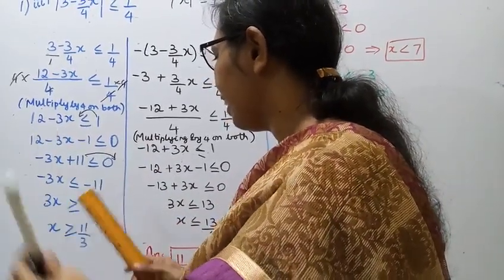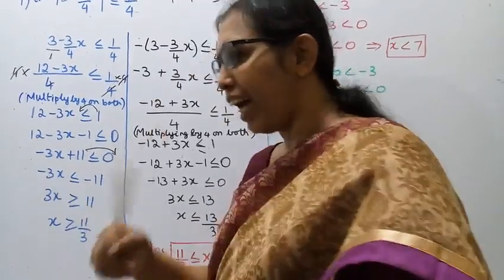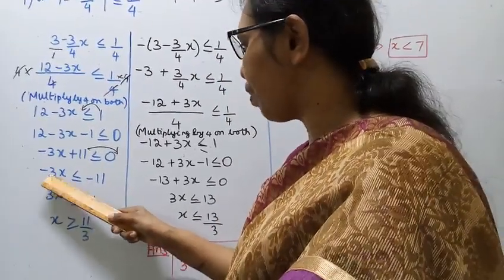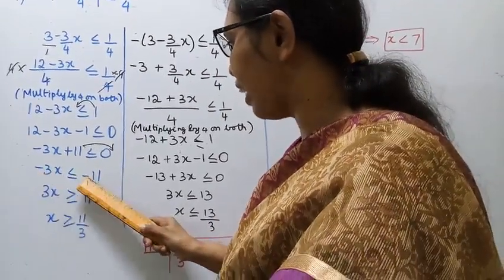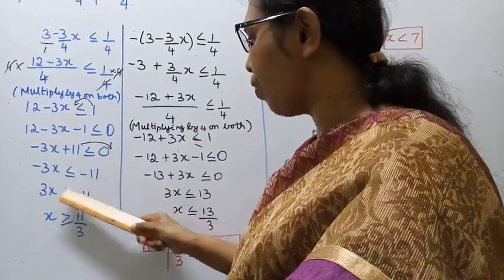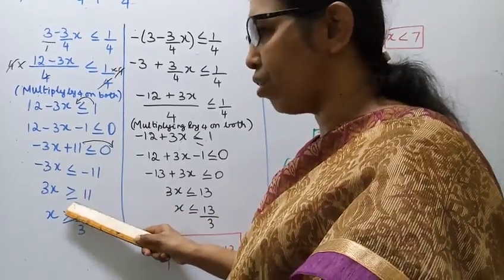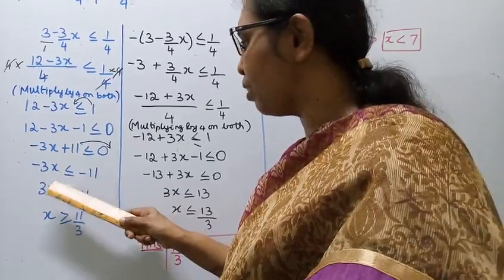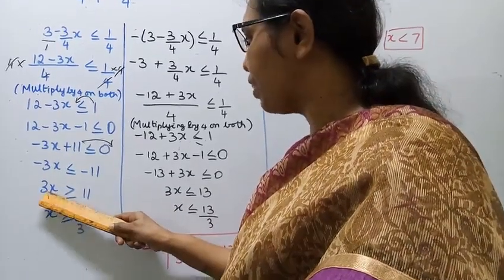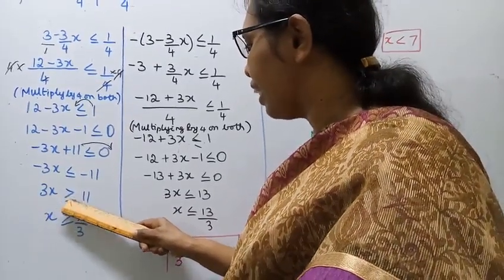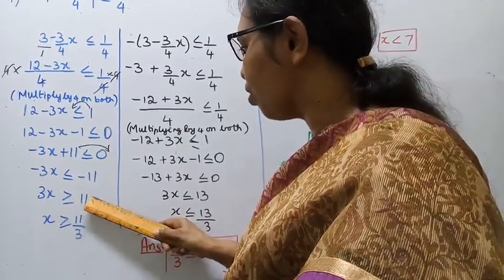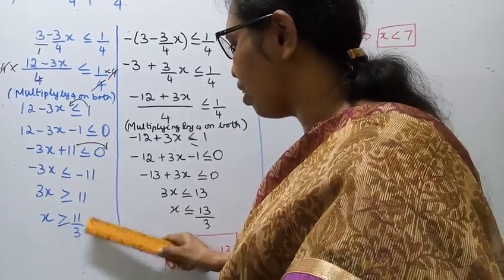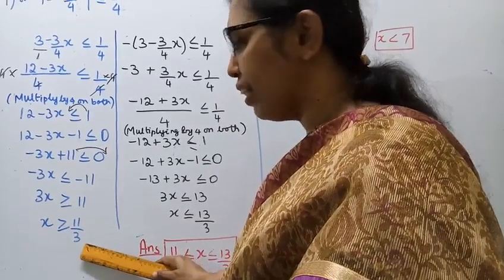The sign changes when dividing by a negative number. So 3x is greater than or equal to 11, which gives x is greater than or equal to 11 by 3.